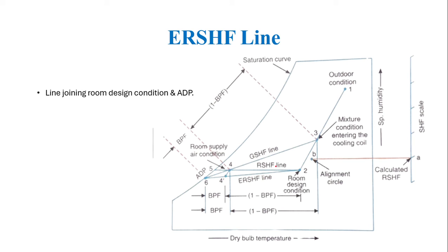The combined diagram shows all three lines: the RSHF line joining room design condition and supply air condition, the GSHF line joining mixed condition and supply air condition, and the ERSHF line joining ADP and room design condition. Process 3 to 4 is the cooling process, and the line from 4 to 6 represents the inefficiency of the coil — the bypass factor — while the remaining length is 1 minus the bypass factor. These are the key terms in psychrometry and air conditioning used for solving numerical problems.